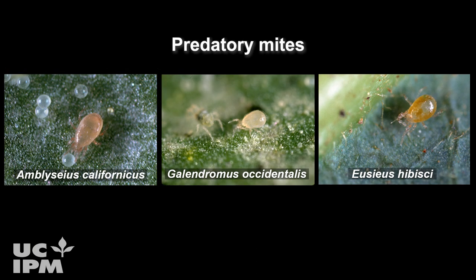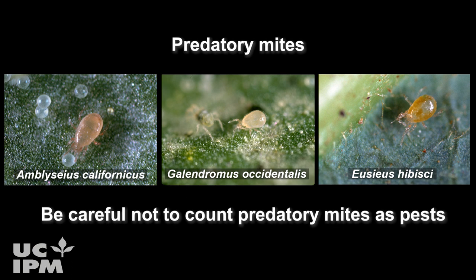There are also several species of predatory mites in avocado that can reduce mite numbers and therefore the need to apply miticides. These mites are shinier and more pear-shaped than the pest mites, and they do not have dark blotches on their bodies. To make appropriate management decisions, pay attention to predatory mites during monitoring and be careful not to count them as pests.